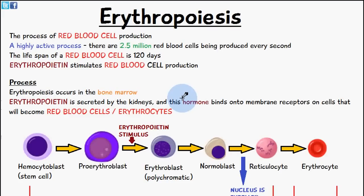Welcome to 5-Minute School. Today's video we're going to be talking about erythropoiesis, which is the process of red blood cell production, or erythrocyte production. Erythrocyte is another way of saying red blood cell. This process is highly active — there are about 2.5 million red blood cells being produced every second, and the lifespan of a red blood cell is about 120 days.